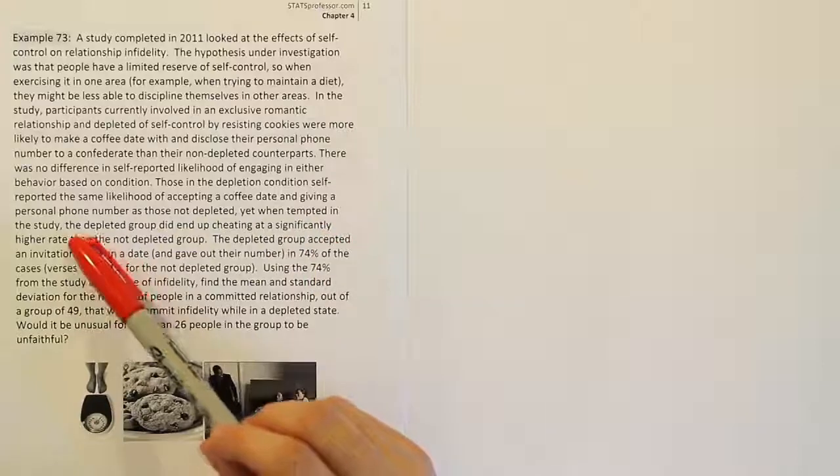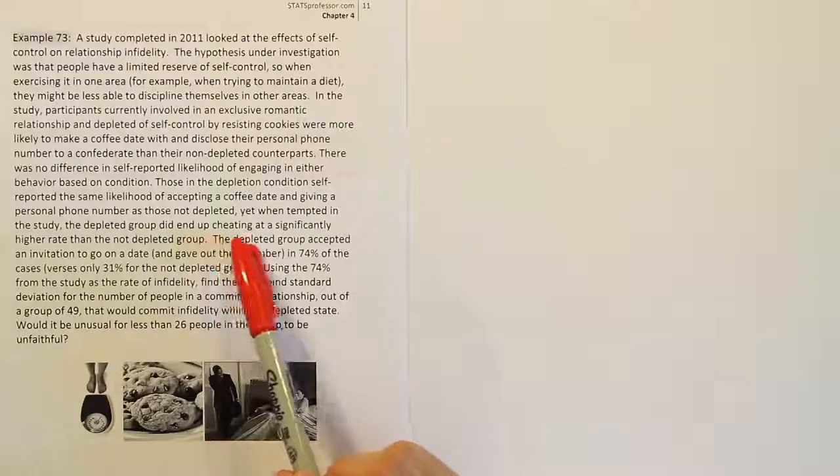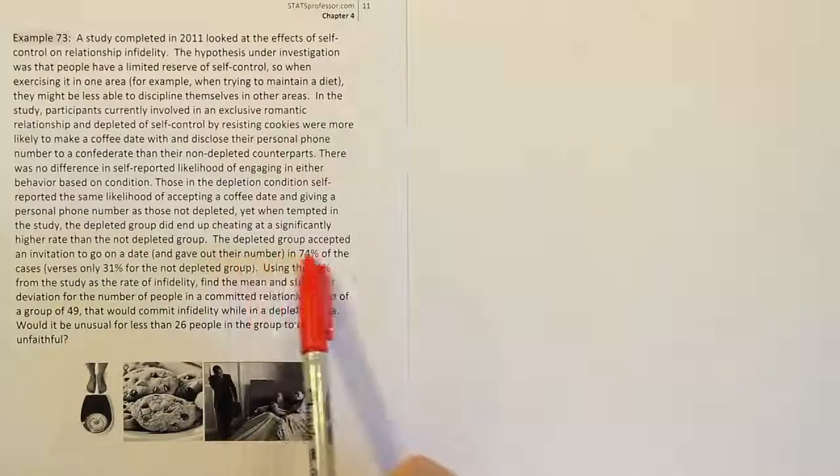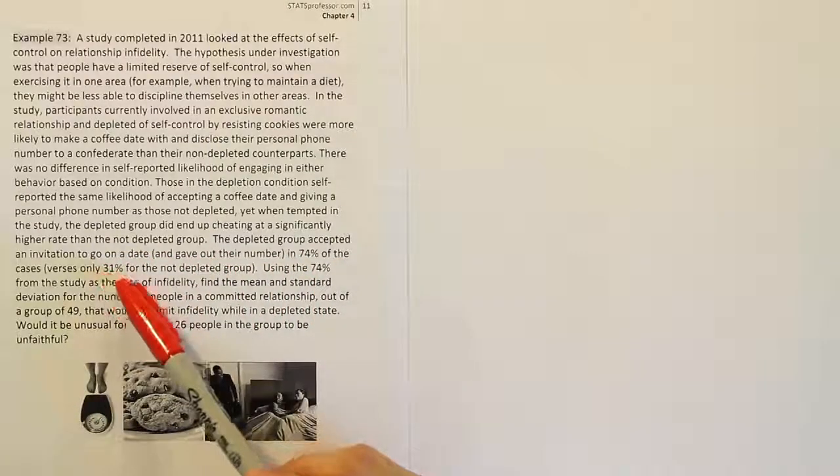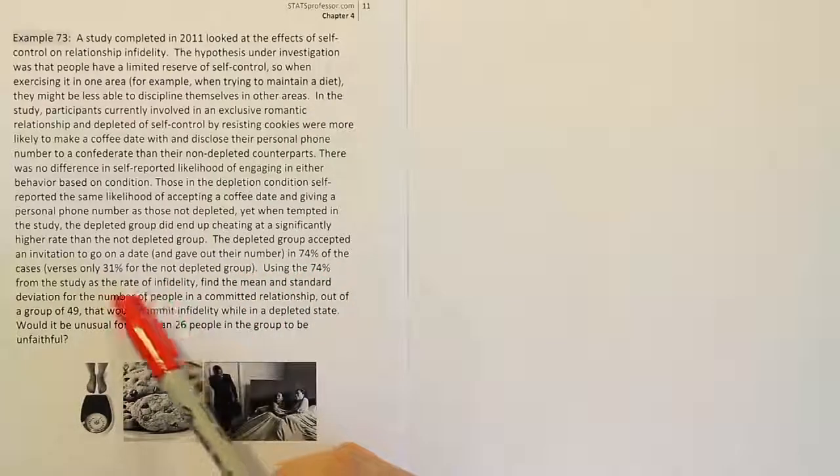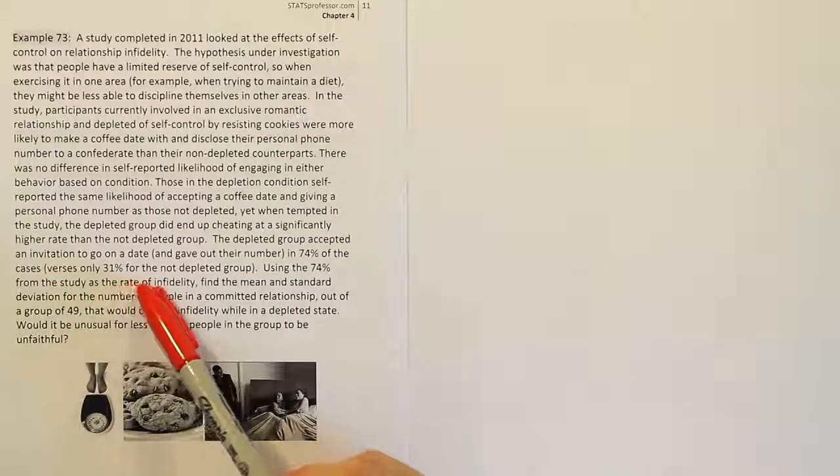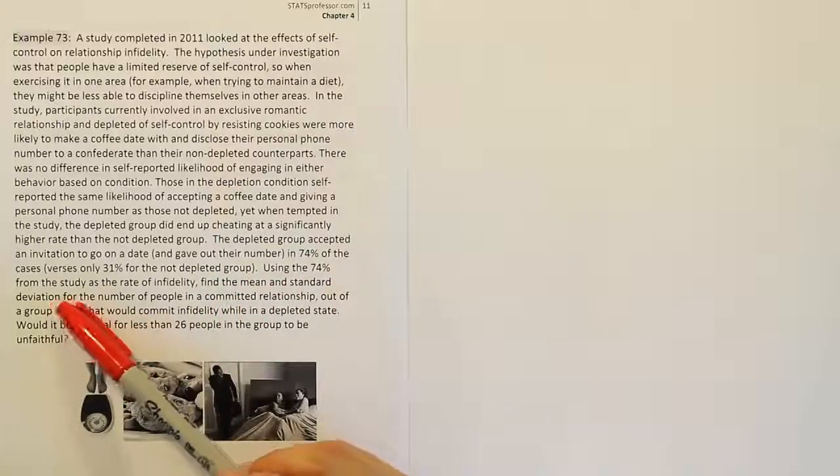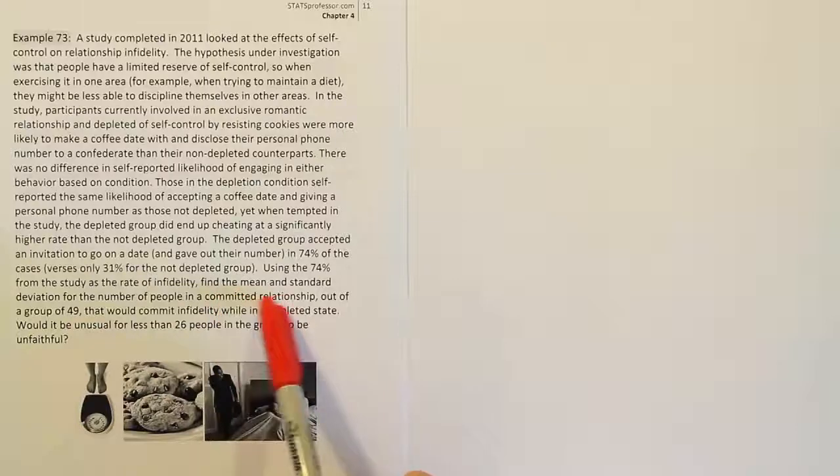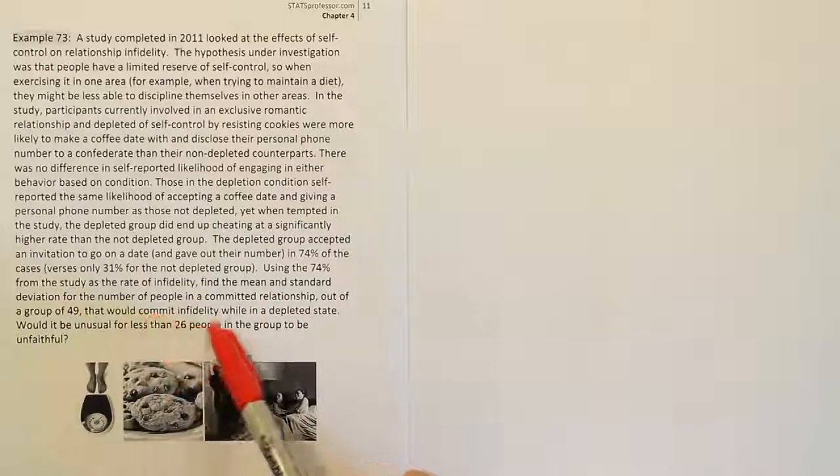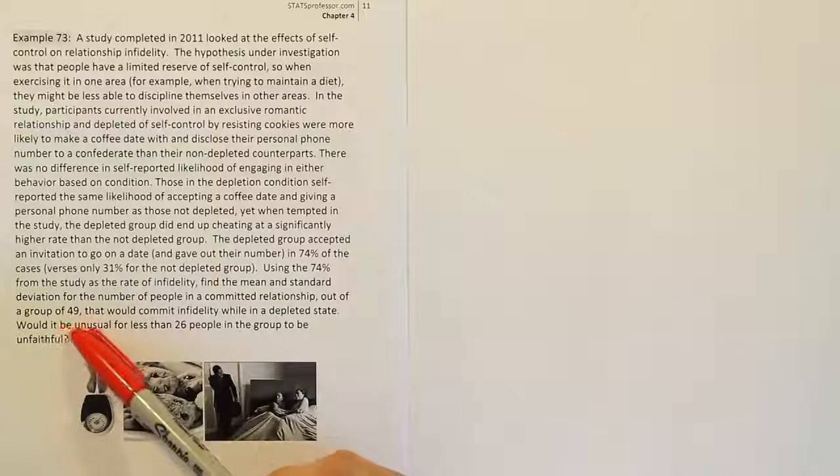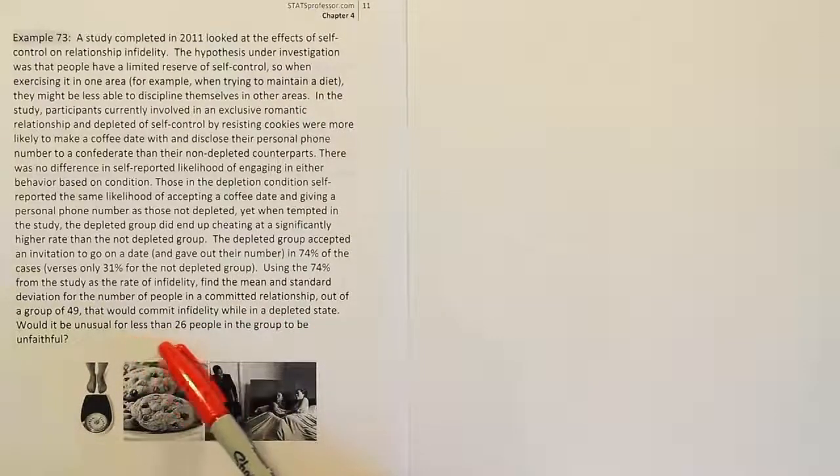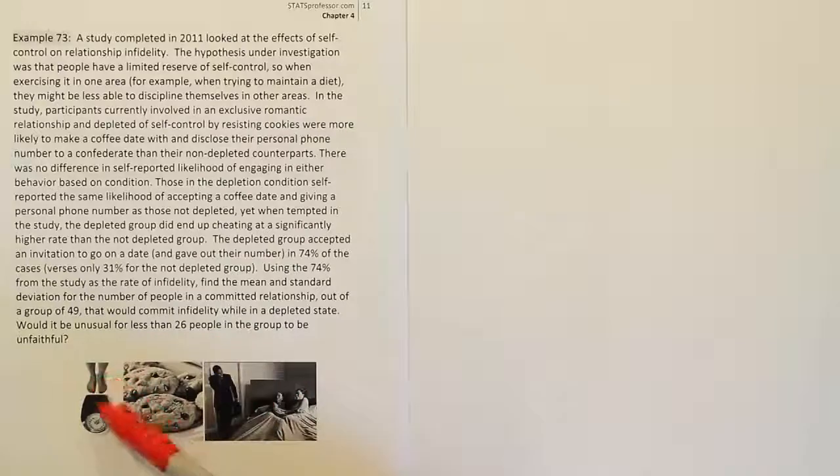Yet when tempted in the study, the depleted group did end up cheating at a significantly higher rate than the non-depleted group. The depleted group accepted an invitation to go on a date and gave out their number in 74 percent of the cases versus only 31 percent for the not depleted group. Using the 74 percent from the study as the rate of infidelity, find the mean and standard deviation for the number of people in a committed relationship out of a group of 49 that would commit infidelity while in a depleted state. Would it be unusual for less than 26 people in the group to be unfaithful?